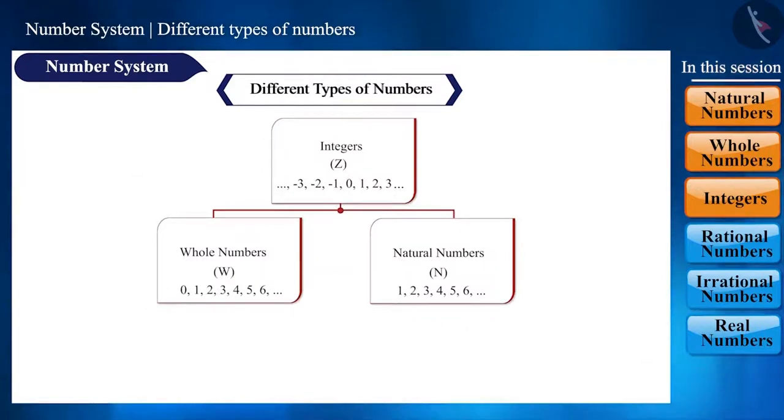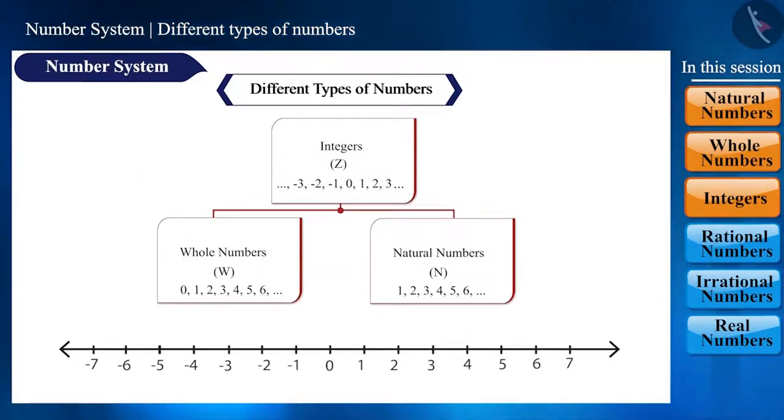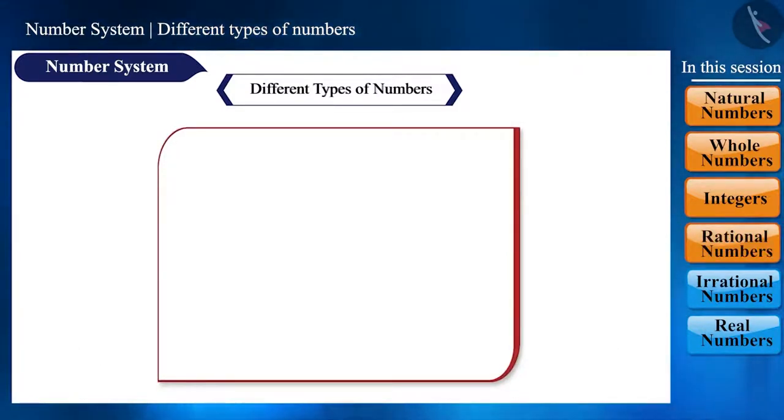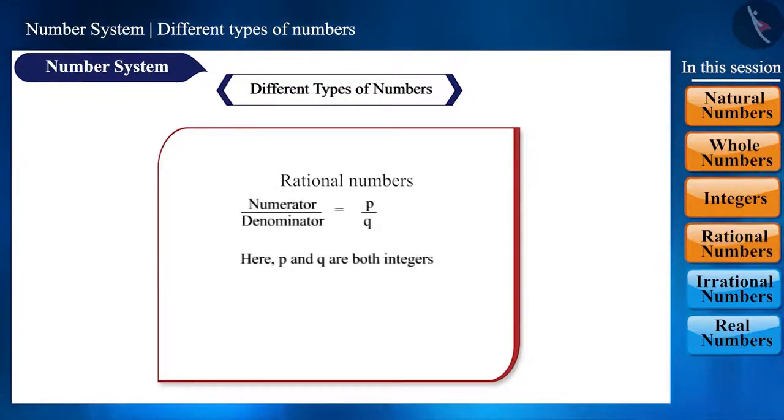We have seen how these numbers are represented on the number line. Now we will talk about rational numbers. Rational number is the one we represent in the form p by q where both p and q are integers and q is not 0. We refer to it with the symbol q which is derived from the English word quotient. But why quotient friends? Because p by q is a fraction that gives us the quotient.